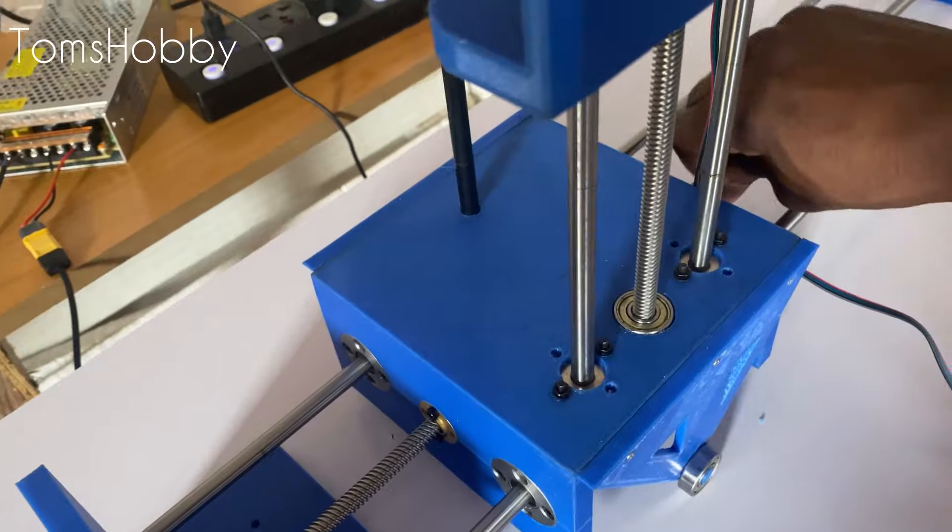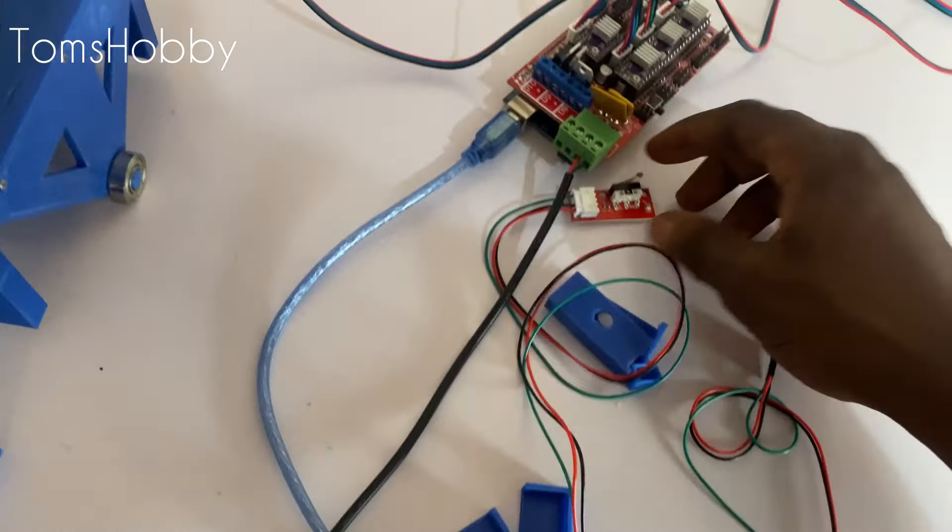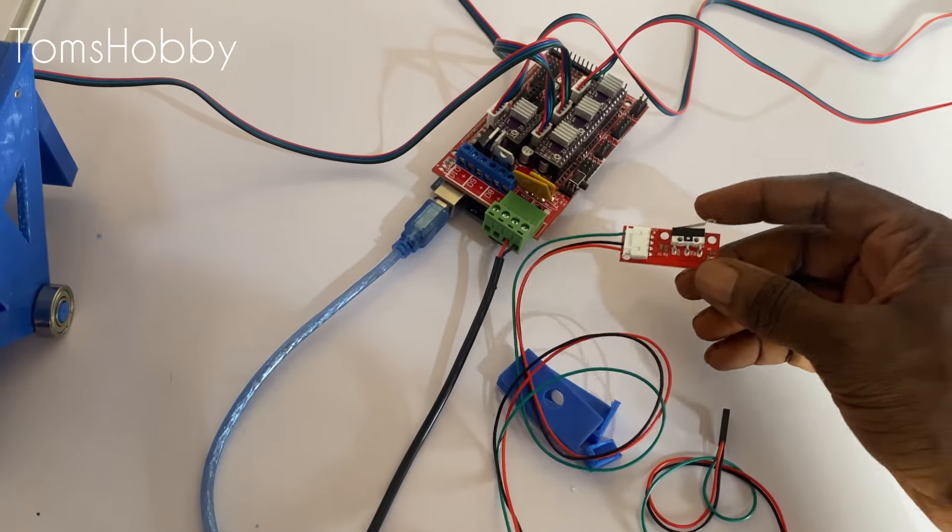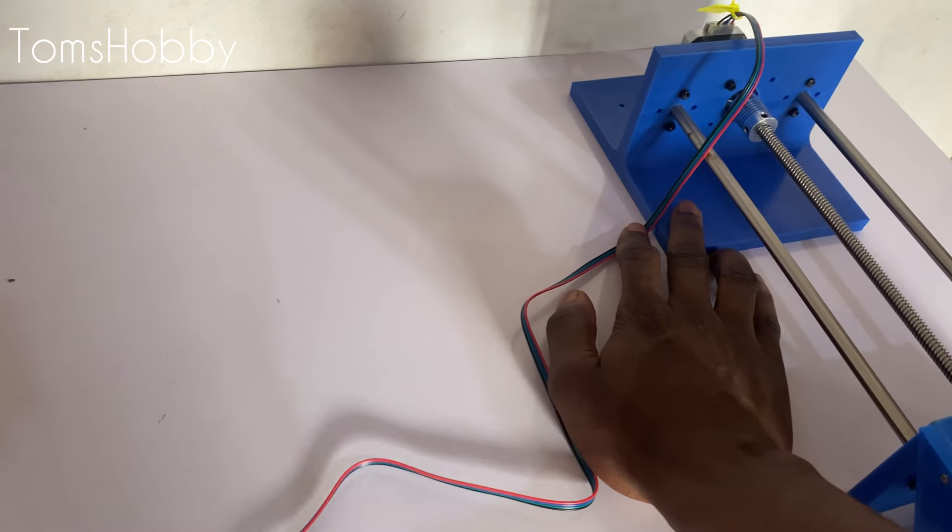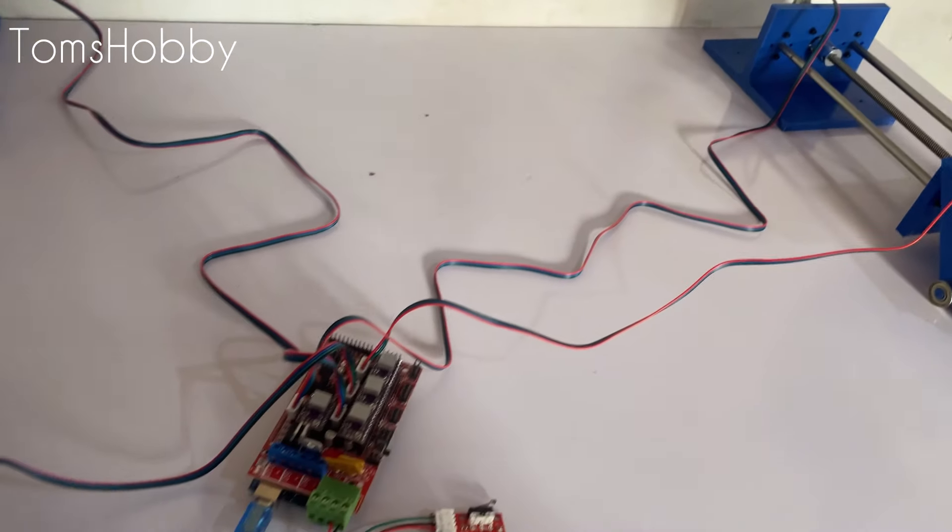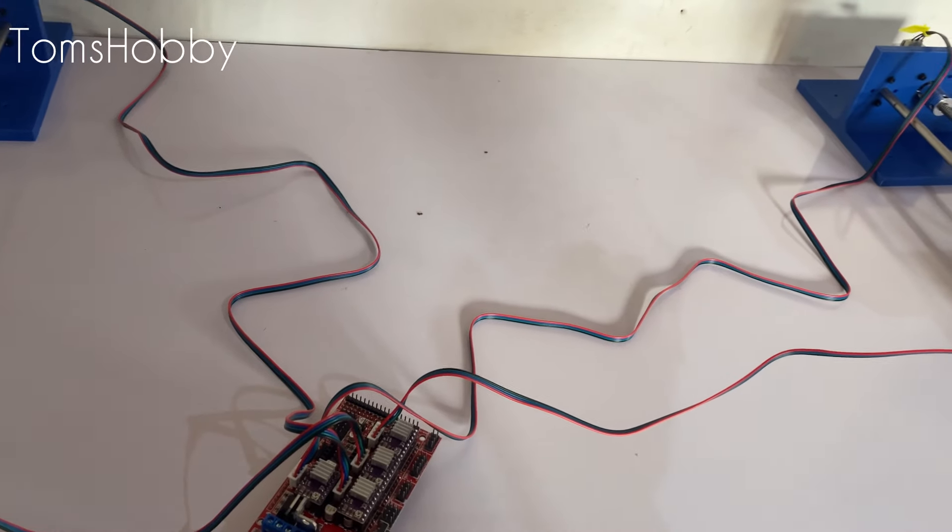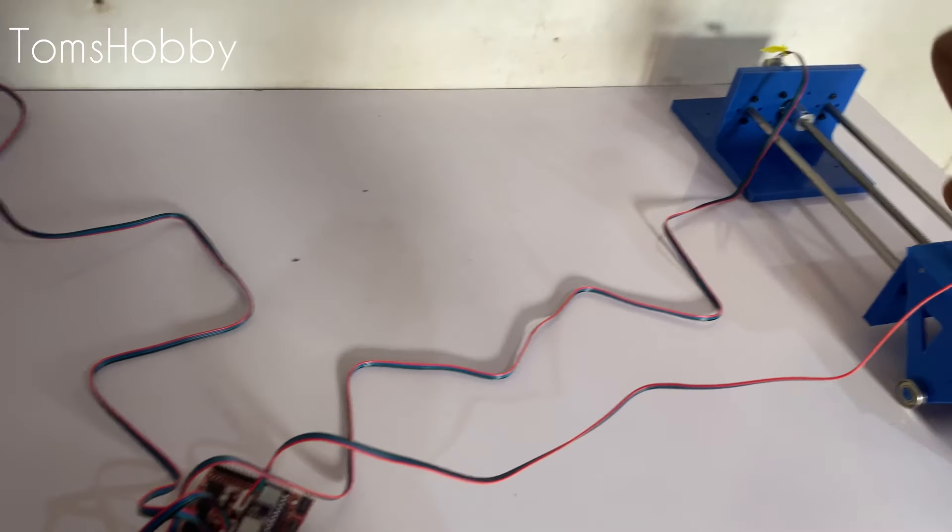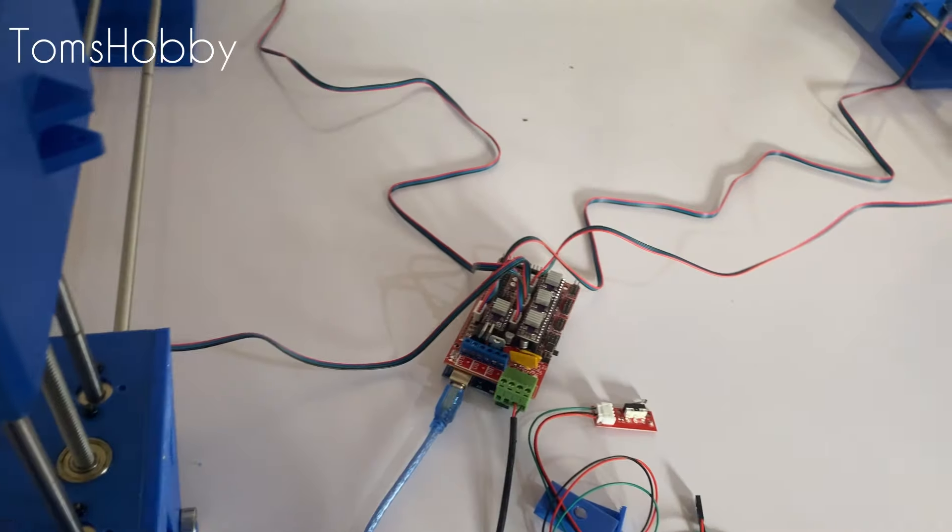What I want to do next now is I want to go ahead and install some limit switches to the end of this gantry so as to have a kind of a way to have a zero point, to have a homing point. So I'm going to add four limit switches and then the other one will be soft limits. Let's go ahead and do that.